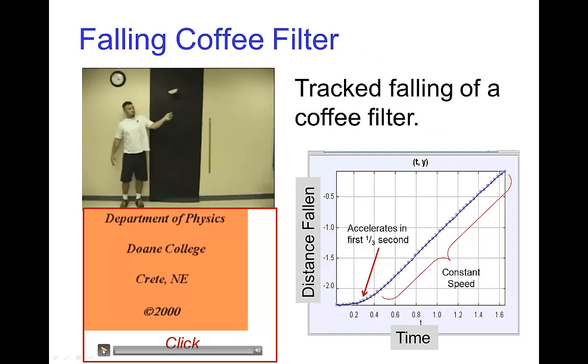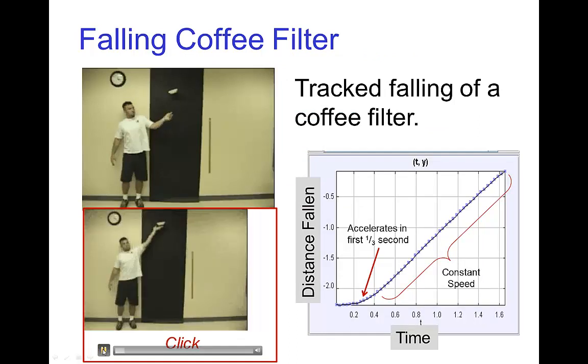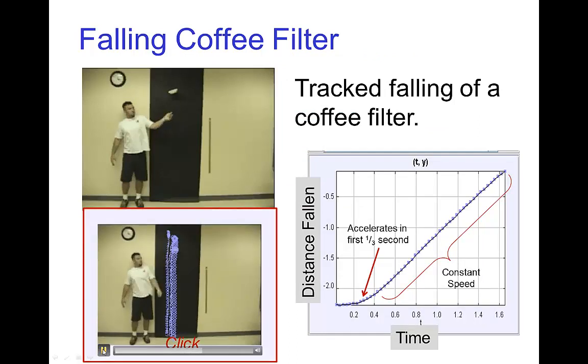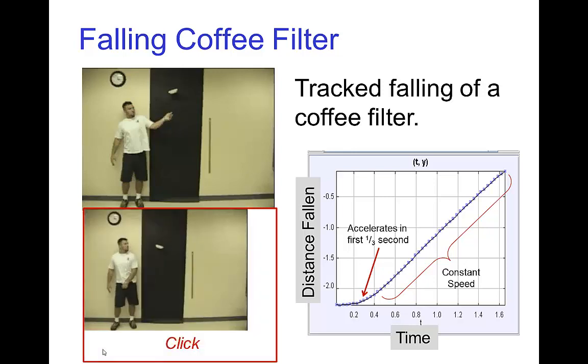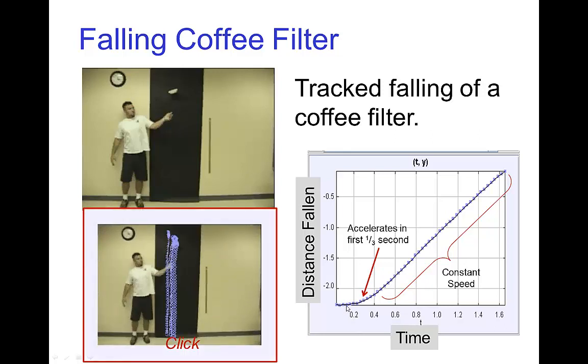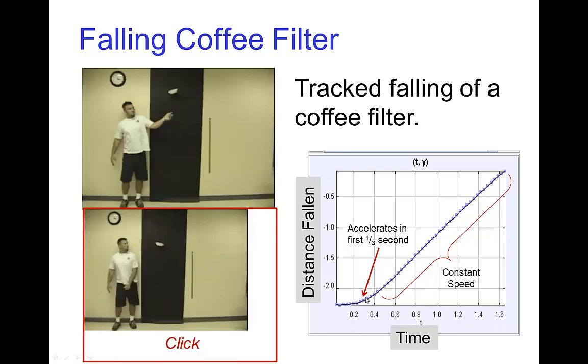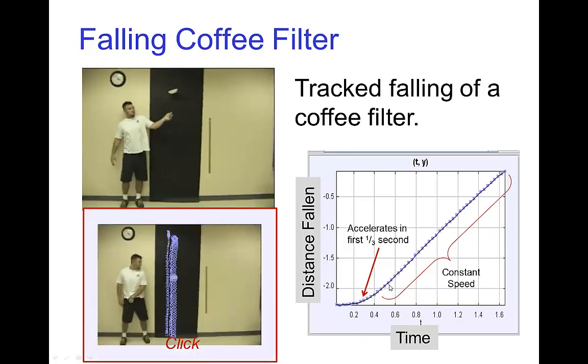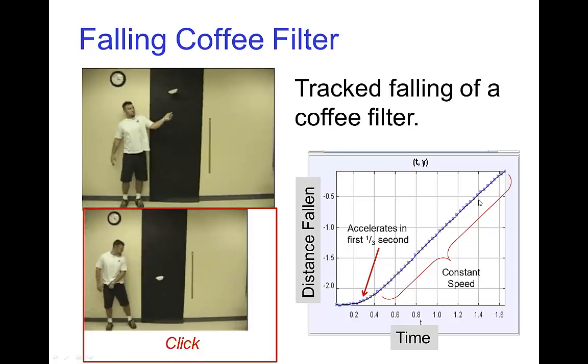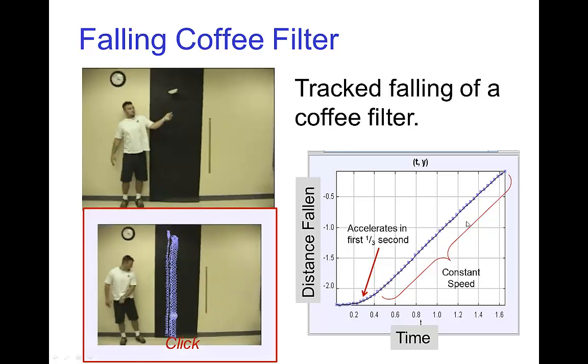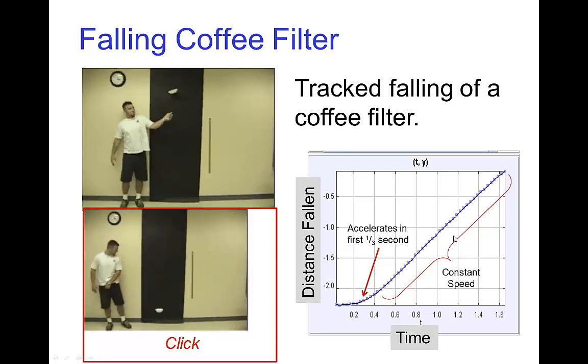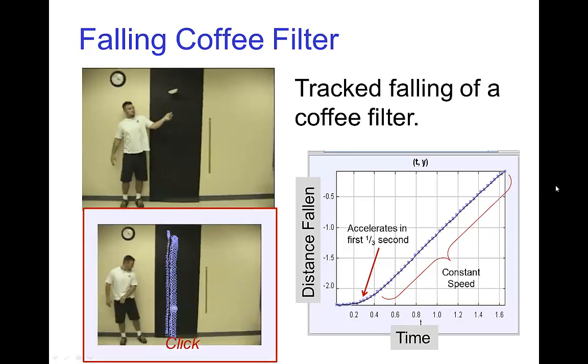Let's look at something simple like a falling coffee filter. Here's a little quick video. And if we track the distance fallen, we see that at first it's a bit of a parabolic curve, but then rather quickly it becomes a straight line. And we know that in the motion graph, when we have a straight line, we're traveling with constant speed.